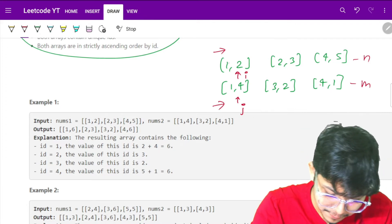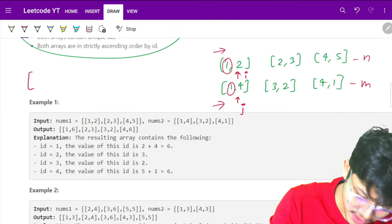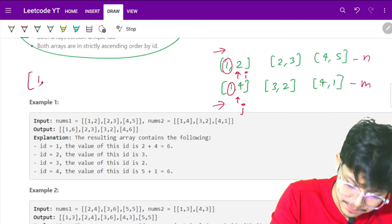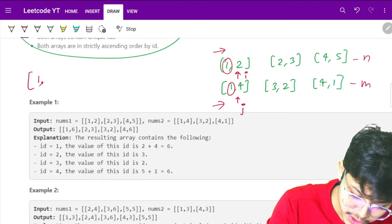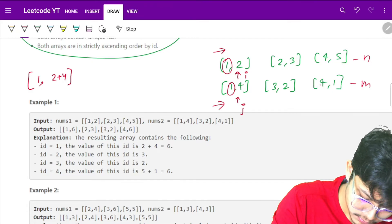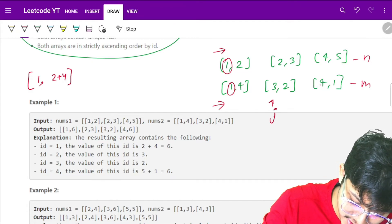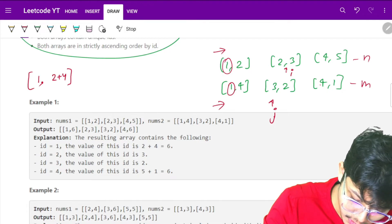This is my final array. If my IDs are the same, I will just have that ID and do addition of these two values, which is 2 plus 4. Then I can just move both of them ahead, j here and i here.